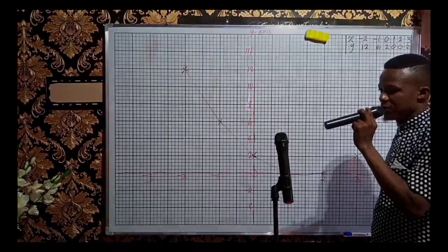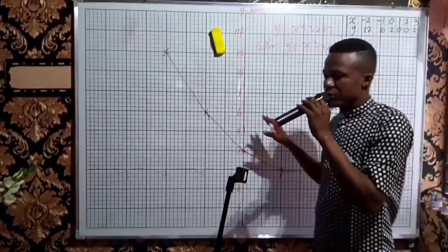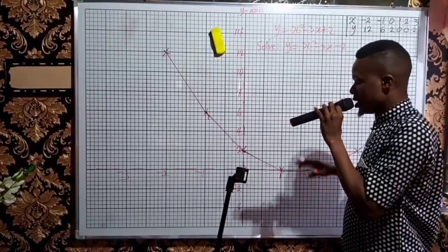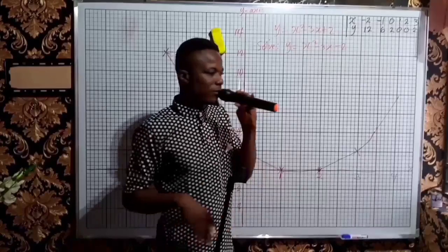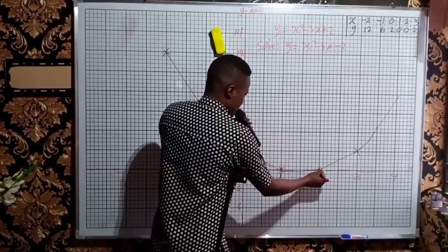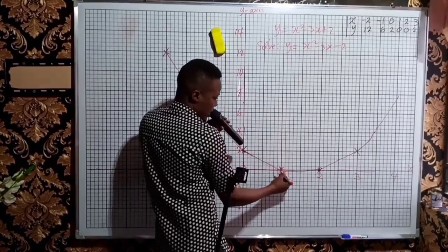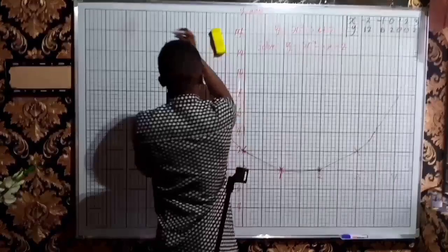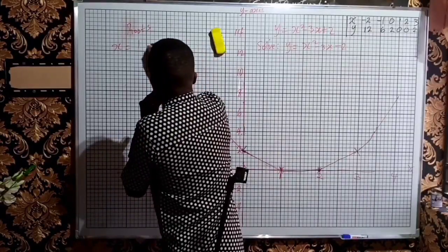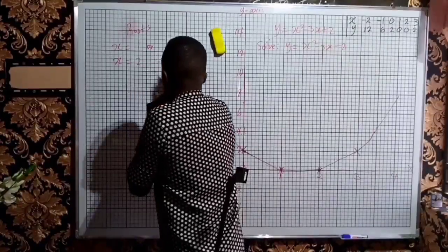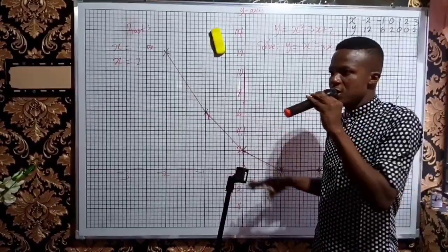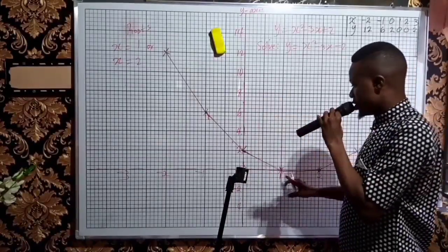Other questions follow from this graph. We are asked to use our graph to find the roots of the quadratic equation. The roots are obtained from the graph at the points where the curve touches the x-axis. As you can see clearly here, the curve is touching the x-axis at two different points, so our roots are x equals 1 or x equals 2. These are the roots of the quadratic equation.